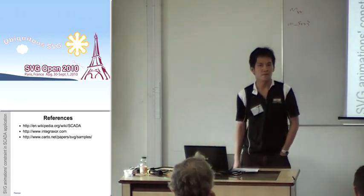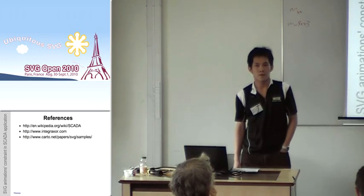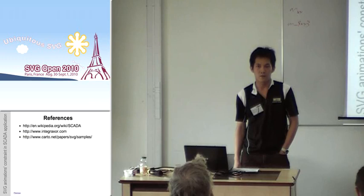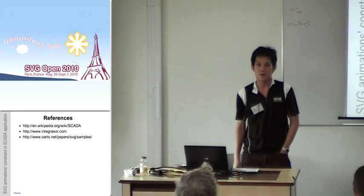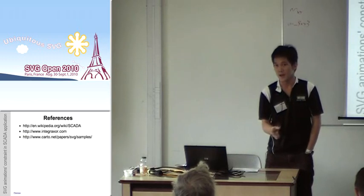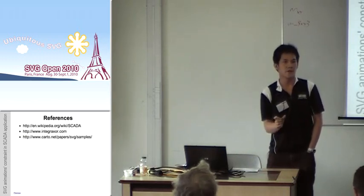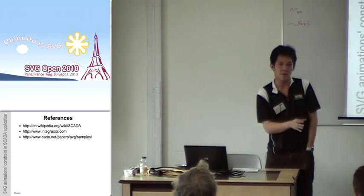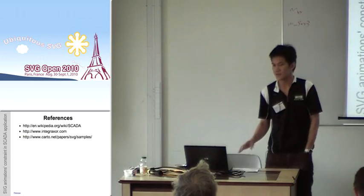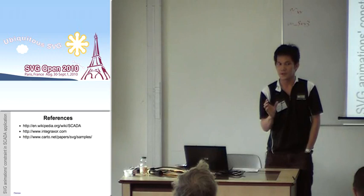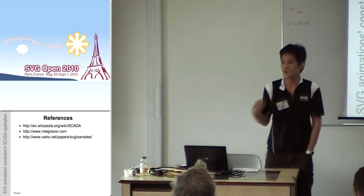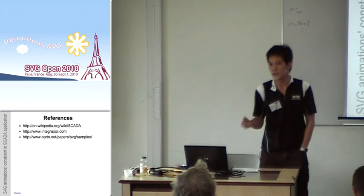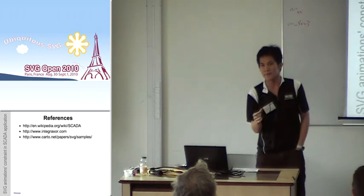An audience member suggested: you might be able to achieve much of this using the begin and end method calls on animation elements — since you're already using scripting to set the state attribute, you could just call begin on the animation element at the desired time. The presenter responded that beginElementAt still uses time to forcefully stop the animation, whereas state-oriented animation is controlled by state, not time — mapping state into time defeats the purpose.